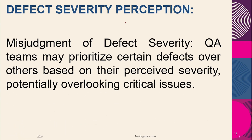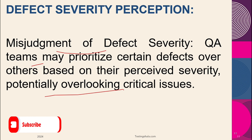The next reason is defect severity perception. Whenever we raise certain defects, we are required to choose a particular severity. There could be a misjudgment of defect severity by the QA team — they might prioritize some other defects over these ones based on perceived severity, potentially overlooking critical issues. Sometimes defects are logged but not fixed because the right severity was not assigned.